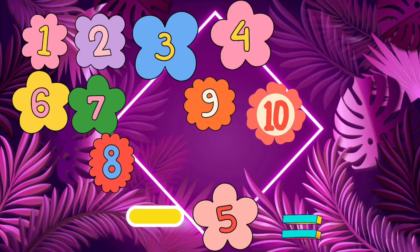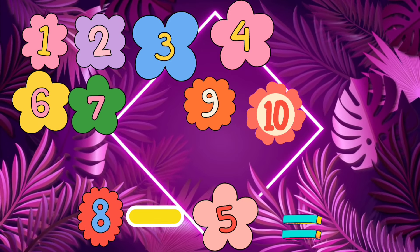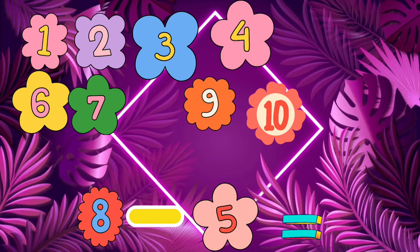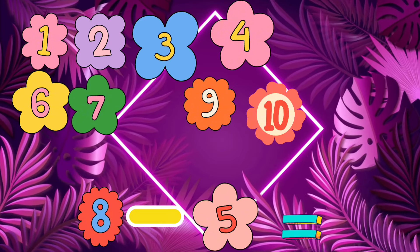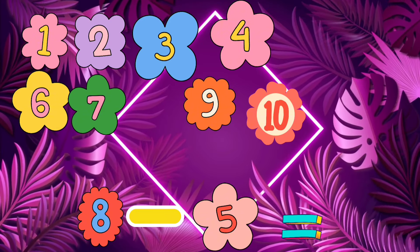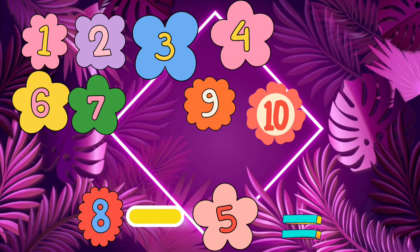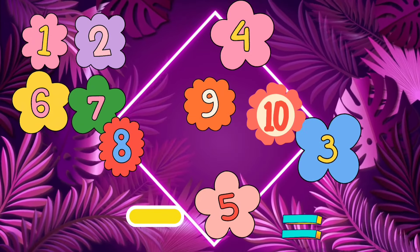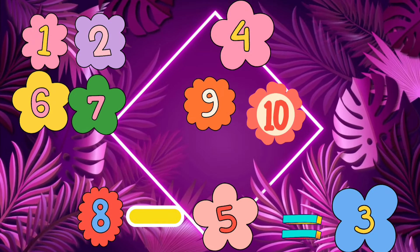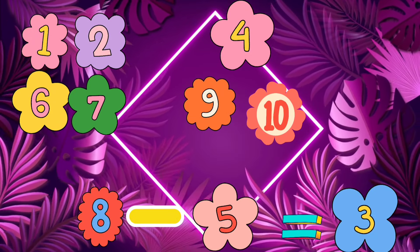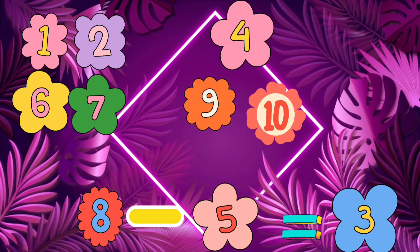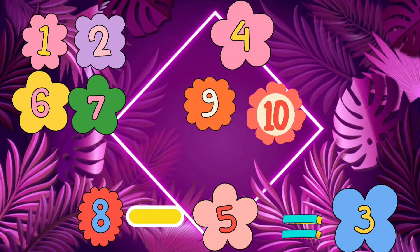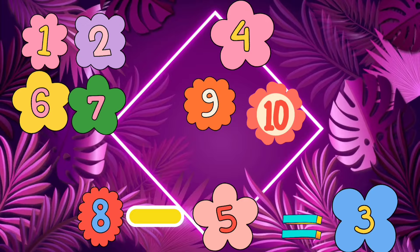Let's subtract five from eight using the number line. Start at eight and jump back five spaces. Do you have any idea where we land? Right — we land on three! So eight minus five equals three. Fantastic!